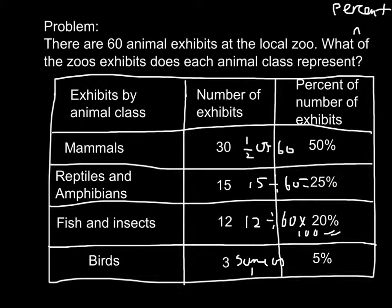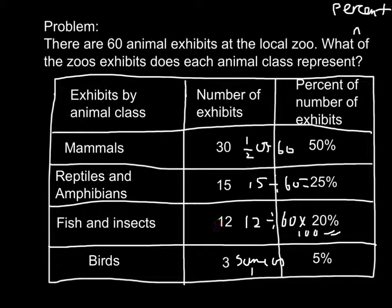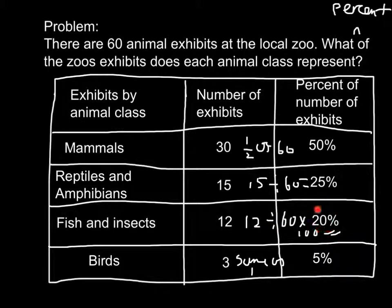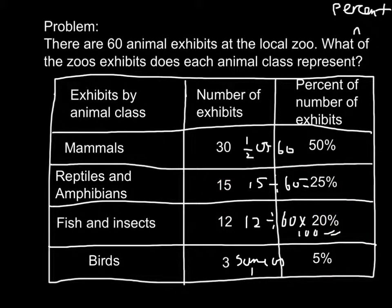I did the same thing for the fish and insects. There are 12 fish and insects, and that equals 20%. I did 12 divided by 60, times 100, which equals 20% — basically the same method.